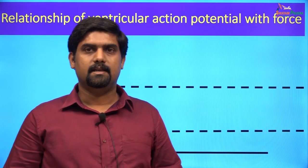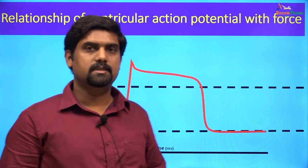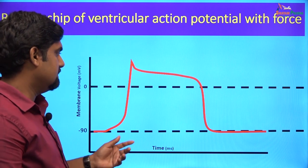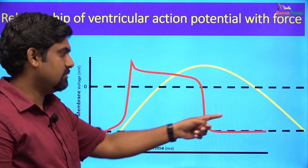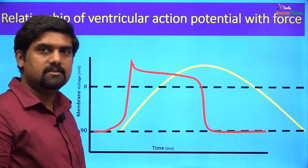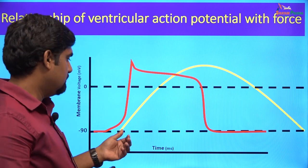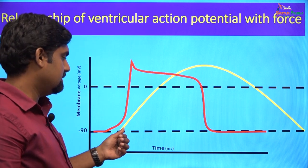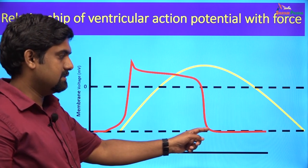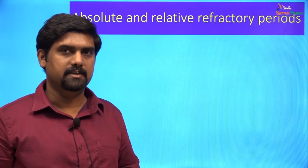Let us discuss the relationship between the ventricular action potential and the force of contraction. The electrical activity of the myocyte leads to the mechanical activity of contraction. This contraction starts immediately after depolarization and reaches a peak when the ventricular myocyte has completely repolarized.